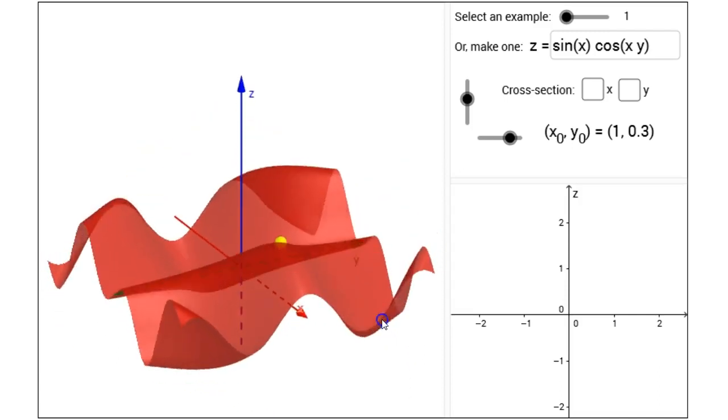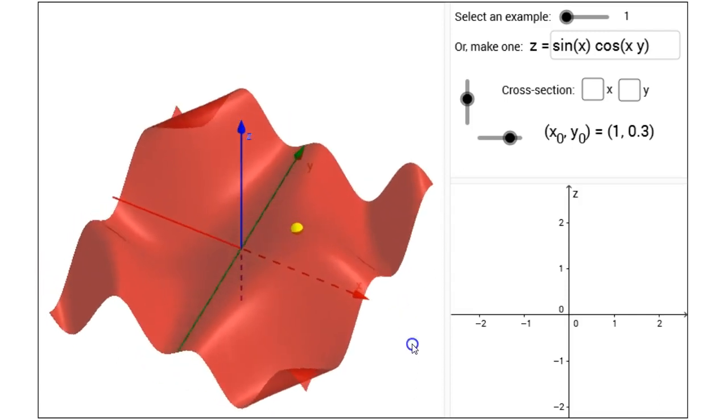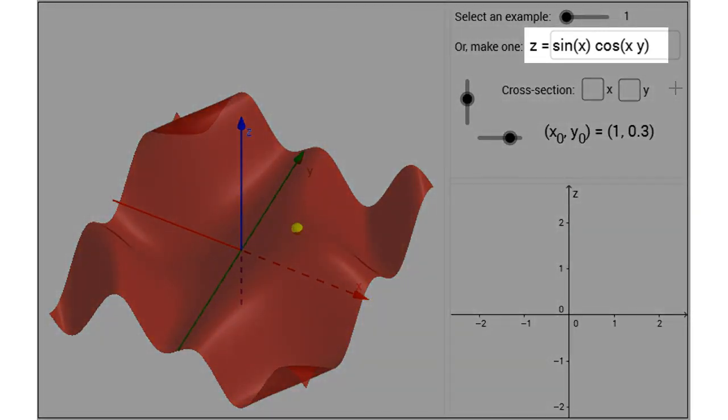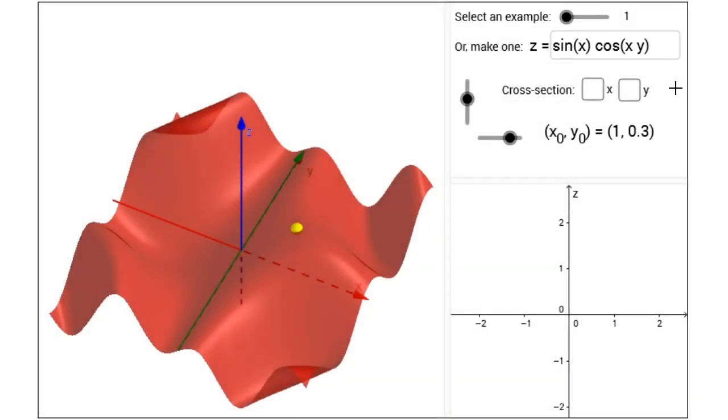When the figure opens, a surface is given to us in the 3D window that I can drag around, and there's a point on that surface. The surface is given by the function f of xy equals sine of x times cosine of xy.